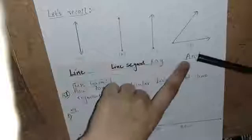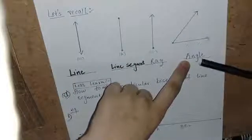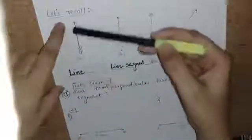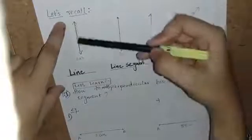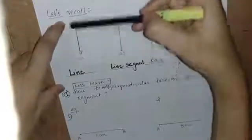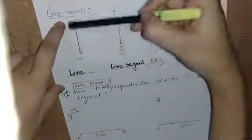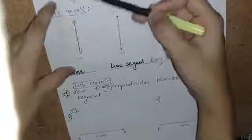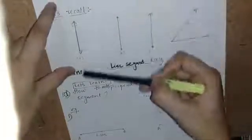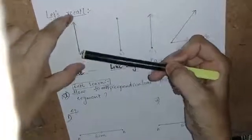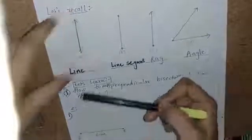Figure D is called an angle. What does the arrow head indicate? It means that this can be extended infinitely. No specific measurement is given.